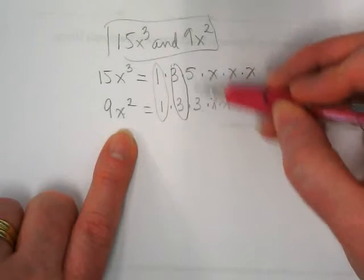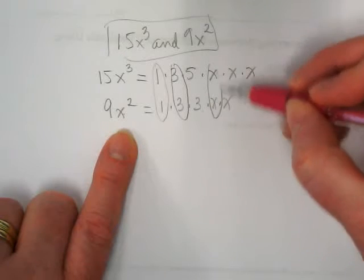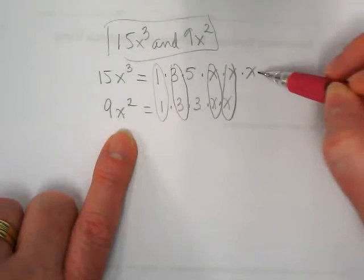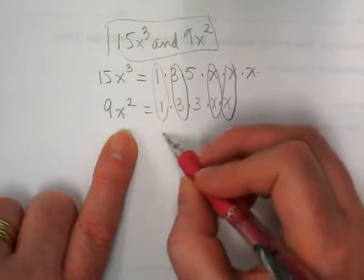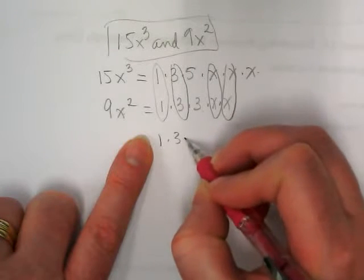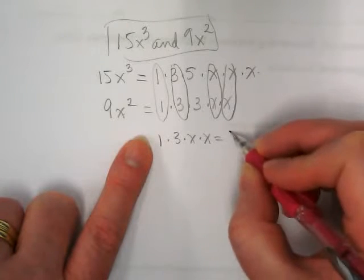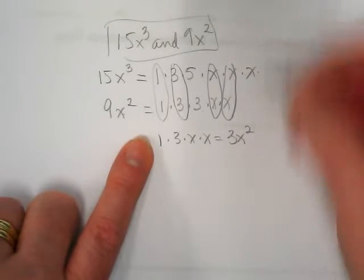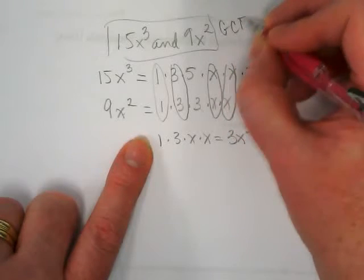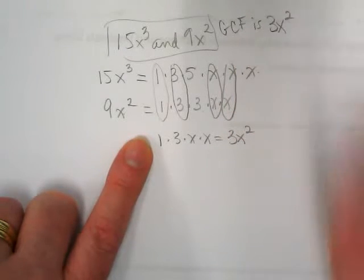They have to have partners for them to be in common. We have two X's, and this one's left over here. So what do we have as our in common? One times three times X times X, which equals three X squared. So the GCF is three X squared.